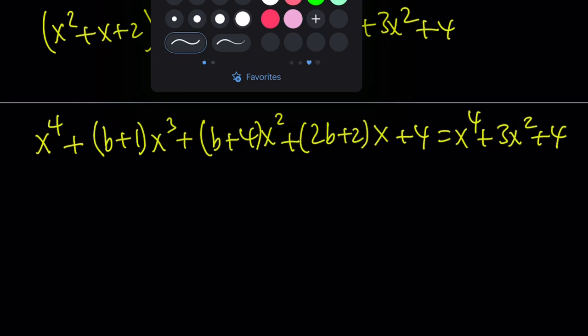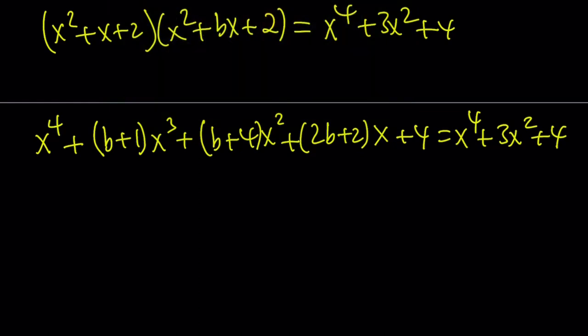Now, what does this mean? It means the coefficient of x to the 4th must be the same, the coefficient of x cubed, and so forth, on either side of the equation. Because these are polynomials, these are true for all values of x, the real number set.